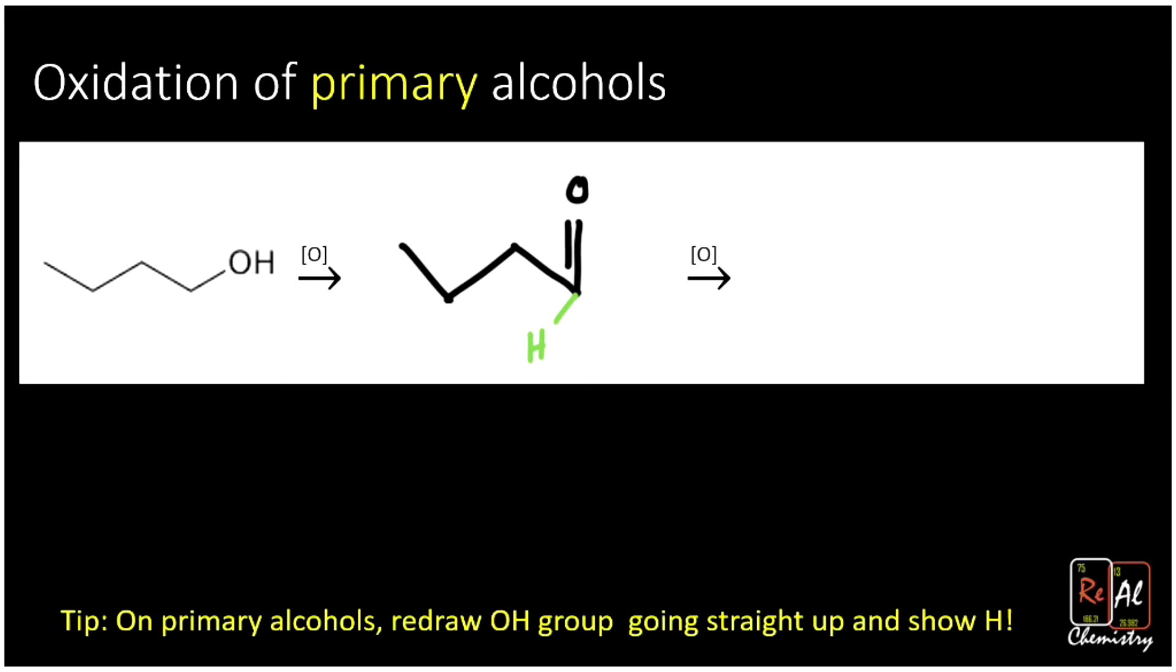Now, we still have one alpha hydrogen. And so we can oxidize it one more time. So I'm going to start once again by just redrawing my same exact product and my one alpha hydrogen. Remember, I got to get rid of the alpha hydrogen again. And I need to add a bond to oxygen. This oxygen can't accept any more bonds. It already has a double bond. So it's done. And so at this point, if we want to add another bond to oxygen, we actually have to add another oxygen on the molecule.